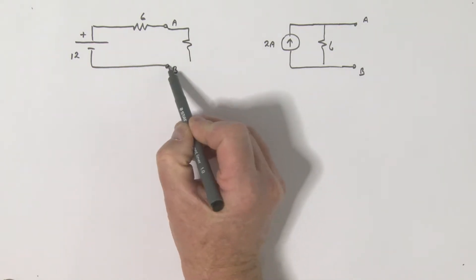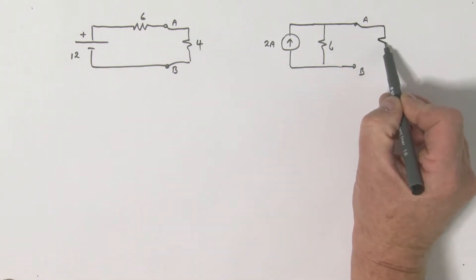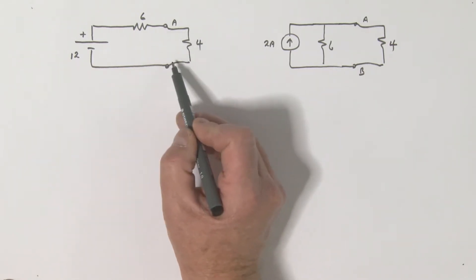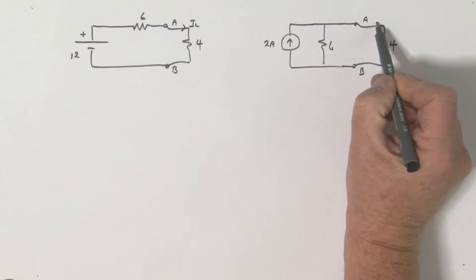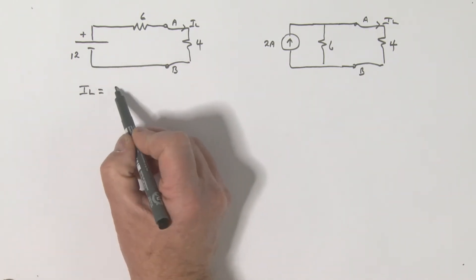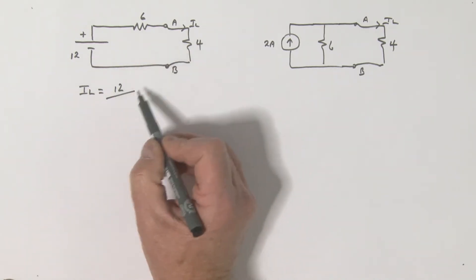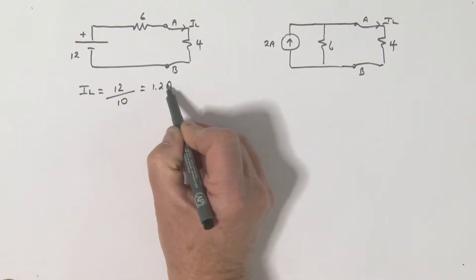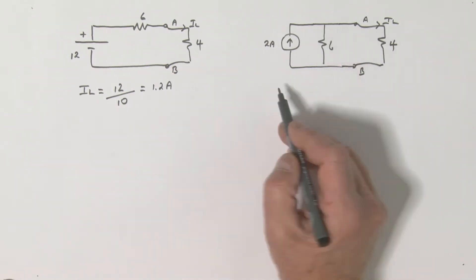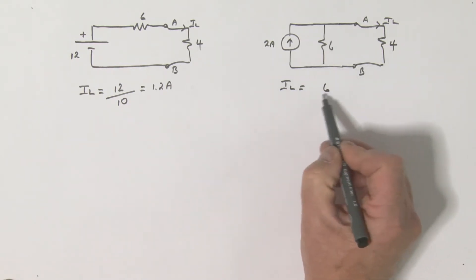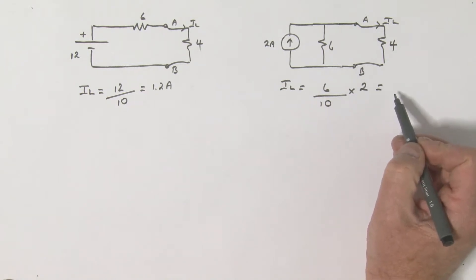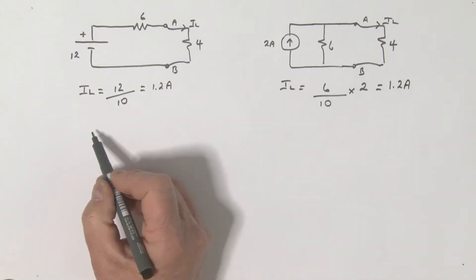Now let's put a load resistance of 4 ohms across both circuits and calculate the load current I_L in each case. For the Thevenin circuit, the load current equals 12 divided by the sum of the two resistors — 6 plus 4 equals 10 — giving 1.2 amps. For the Norton circuit, we use current division: take the opposite resistor 6, divide by the sum 10, and multiply by the 2 amps, which also gives 1.2 amps.